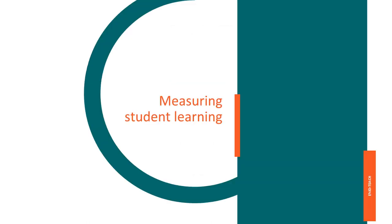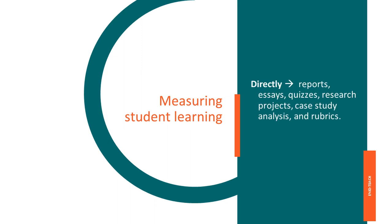Measuring student learning: it is always useful to determine whether students or group participants are indeed learning what you intended or have reached the common ground in the collaborative environment. To measure the level of acquired knowledge, there are both direct and indirect strategies that could be used. Direct measures may include reports, essays, quizzes, research projects, case study analysis, and rubrics for oral and other performances.